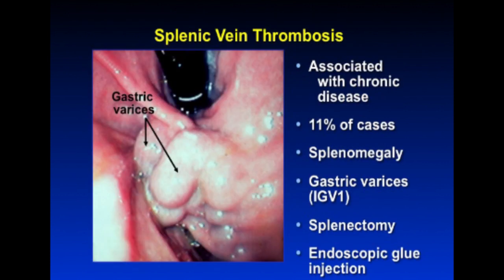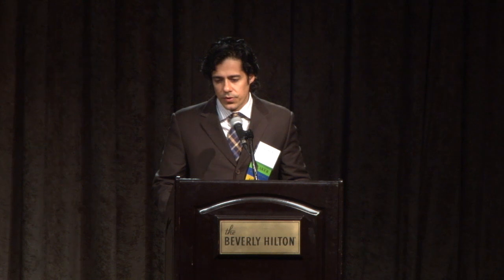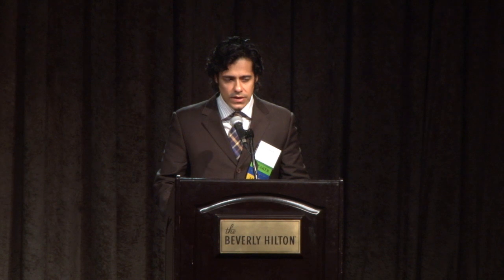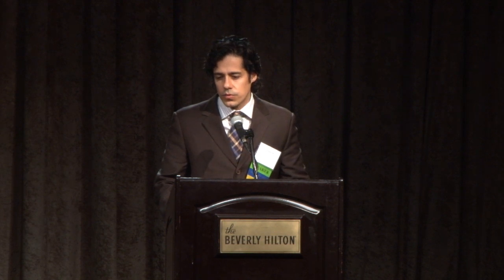Briefly on bleeding complications: isolated gastric varices classified as IGV-1 often don't bleed, but when they do it can be severe. Treatment is splenectomy, or if available, glue injection or other tissue adhesive injection. In summary: chronic pancreatitis is a spectrum and can be difficult to diagnose; emphasize multidisciplinary management; your patient population and selection really matters in terms of success; and what you ultimately choose should be tailored to the specific patient.